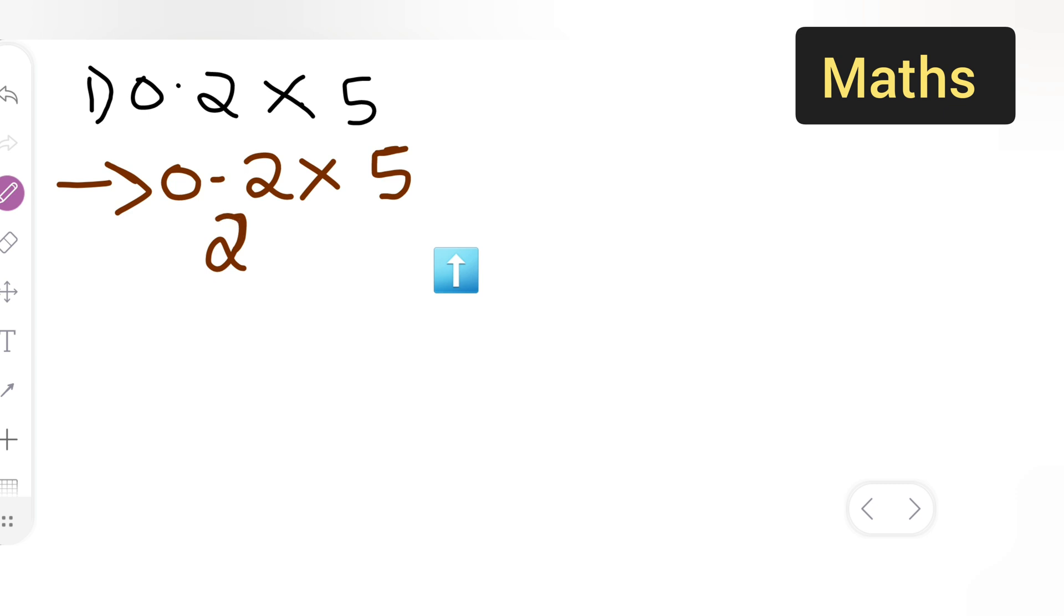Write down 2, which is equal to 2 upon 10 multiplied by 5. This will be an easy way for you all.